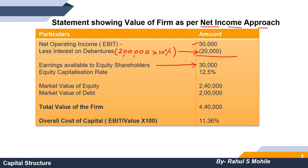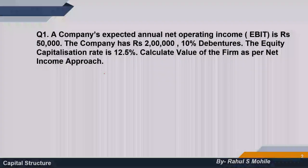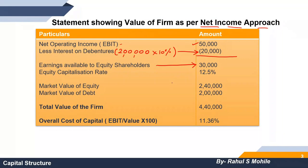Next, we write the equity capitalization rate. The equity capitalization rate given in the question is 12.5%. We divide the earnings available to equity shareholders by 12.5%: that is 30,000 divided by 12.5%, which gives us 2,40,000. This is called the market value of equity.